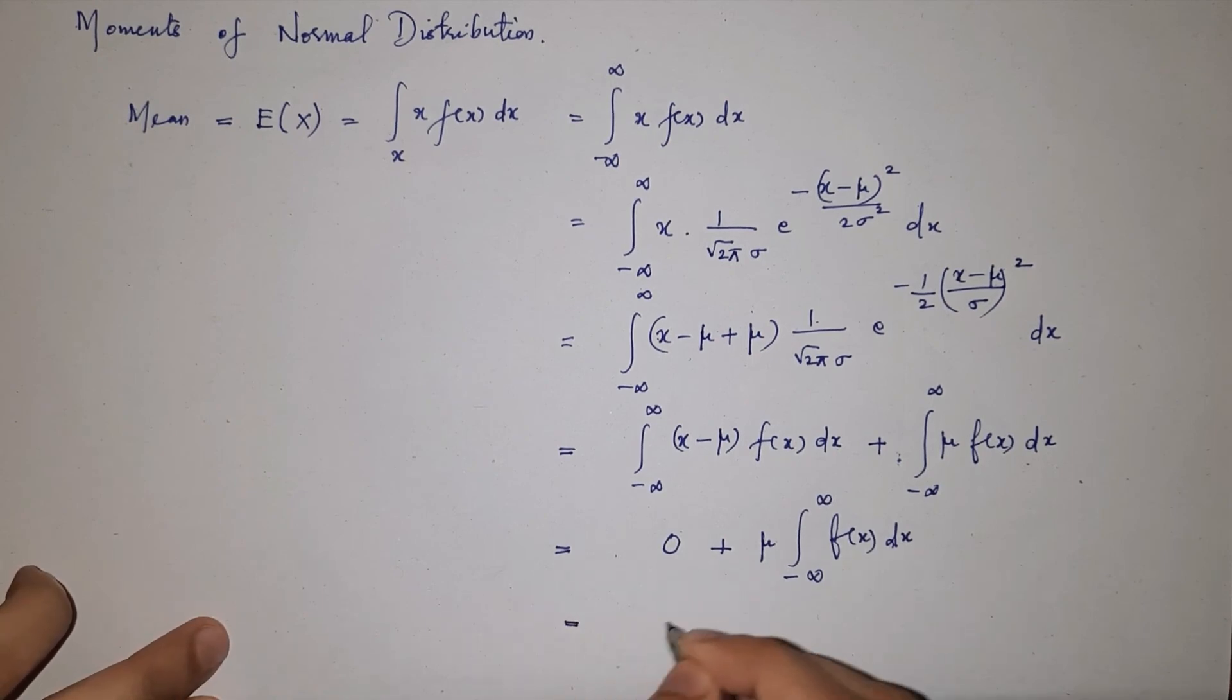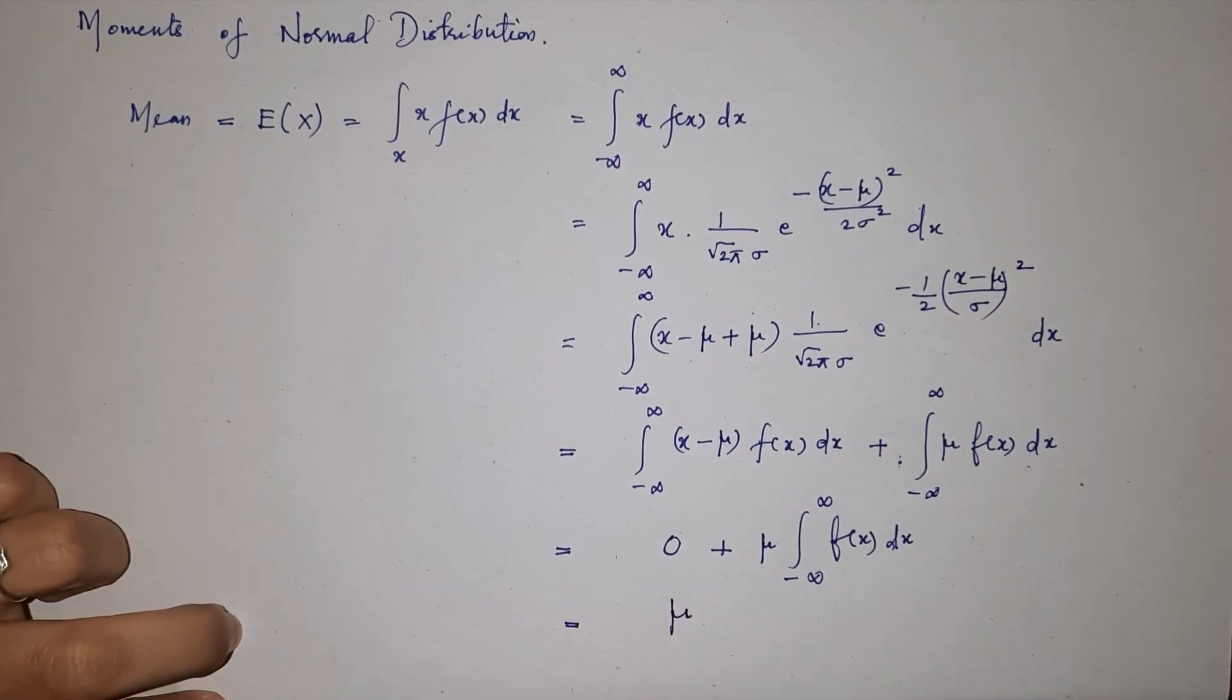This is equal to mu. Therefore, the mean of the normal distribution is mu.